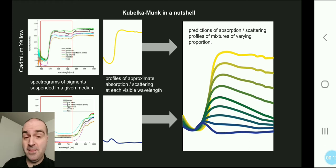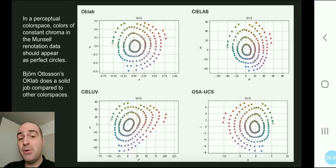Kubelka-Munk theory being, of course, a set of equations that allows us to predict or model mixtures of substances, how those mixtures will affect their absorption and scattering of light, and therefore you can model how the mixture of two paints might look.